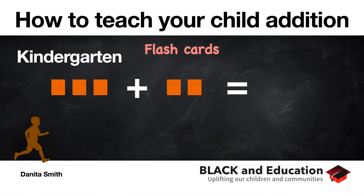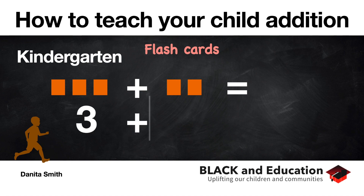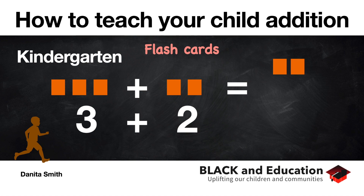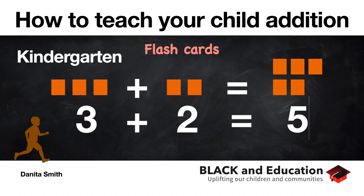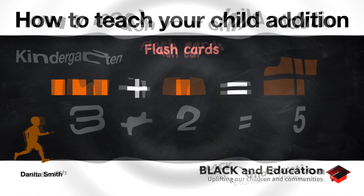Let's say I have three blocks here — three blocks on the left — plus two more blocks. So what is three plus two? One, two, three, and then four, five. Three plus two is equal to five. Let's get the hang of it and do some more.